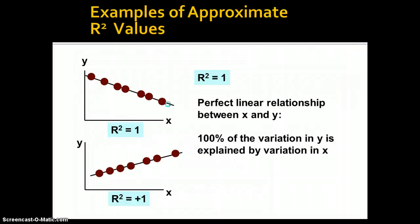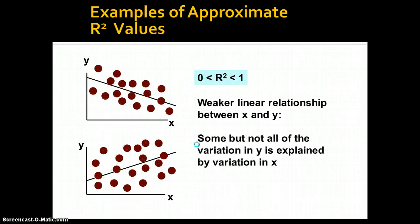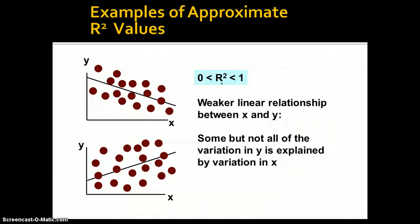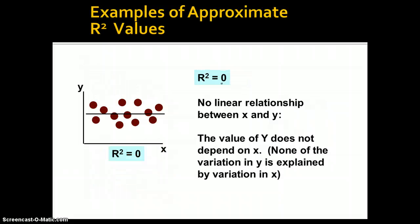If it's a perfect linear relationship, r squared will be 1 — 100% of the variation in y is explained by variation in x. When we have a weaker linear relationship, r squared is somewhere between 0 and 1, meaning some but not all of the variation in y is explained by variation in x. If we have absolutely no variation in y explained by x, the line is flat — there's no relationship.